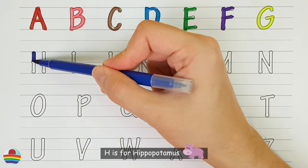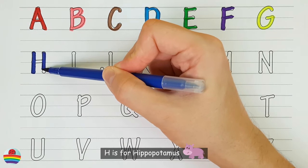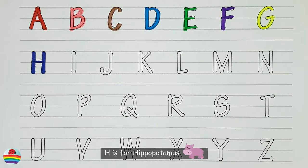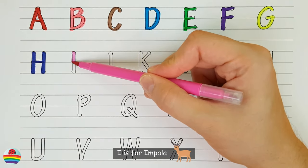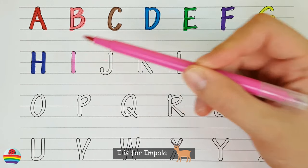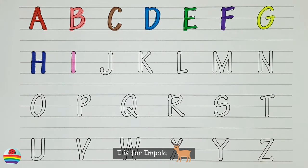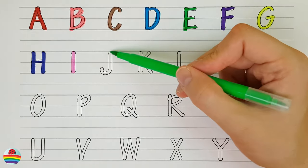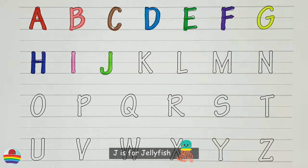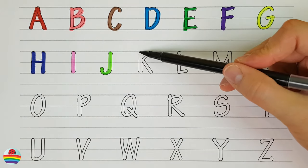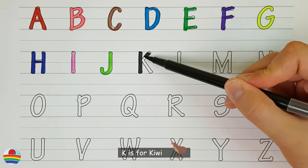H. H is for hippopotamus. H. I. I is for impala. I. J. J is for jellyfish. J. K. K